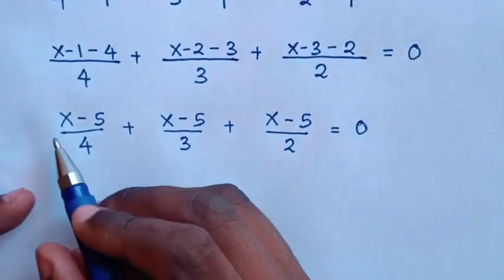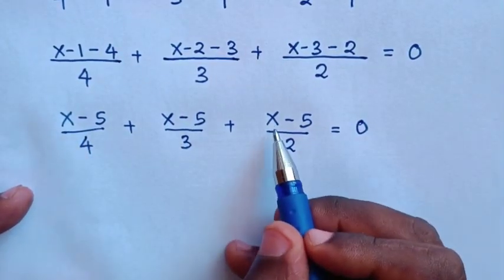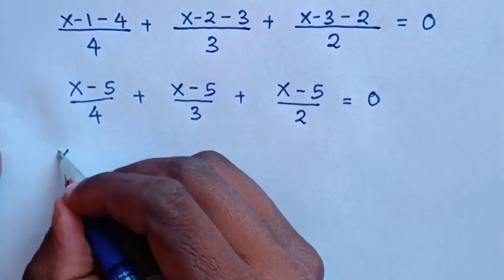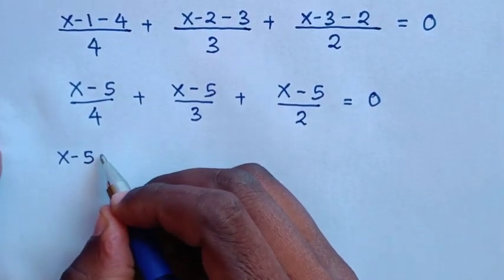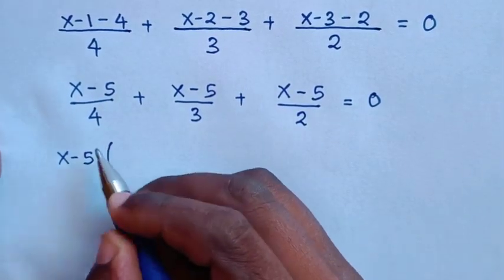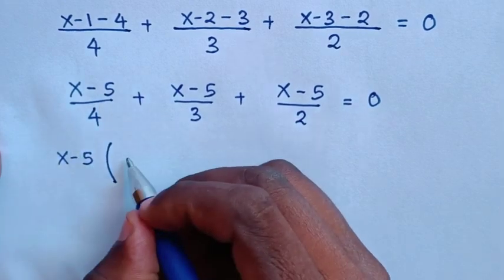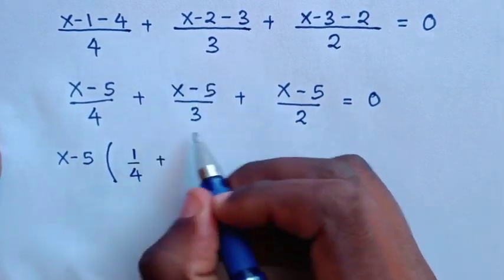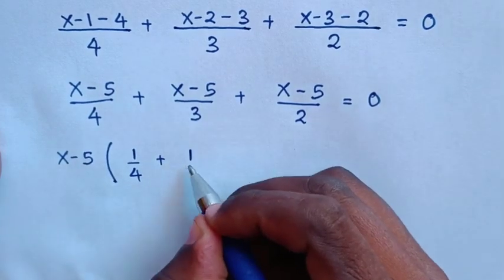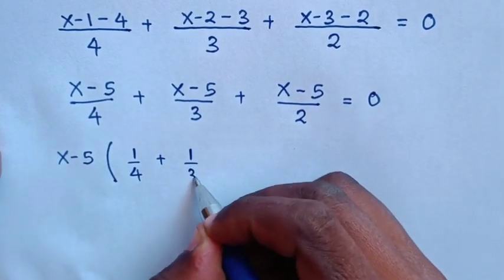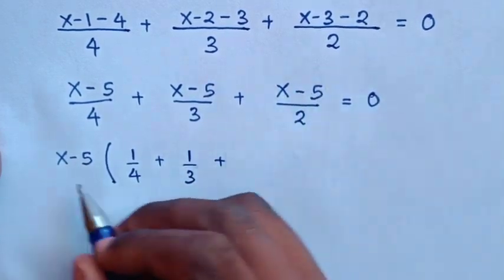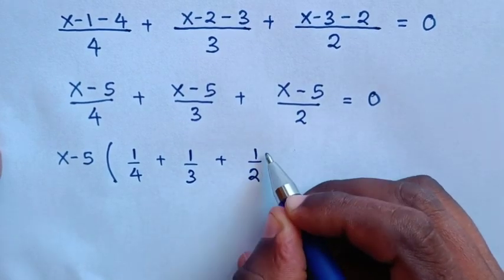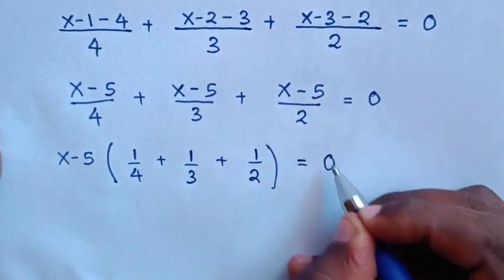Then in our equation, x minus 5 is common. So in the next step, we take x minus 5 out of the bracket. This divided by this is 1 over 4, plus 1 over 3, plus 1 over 2, in bracket, is equal to 0.